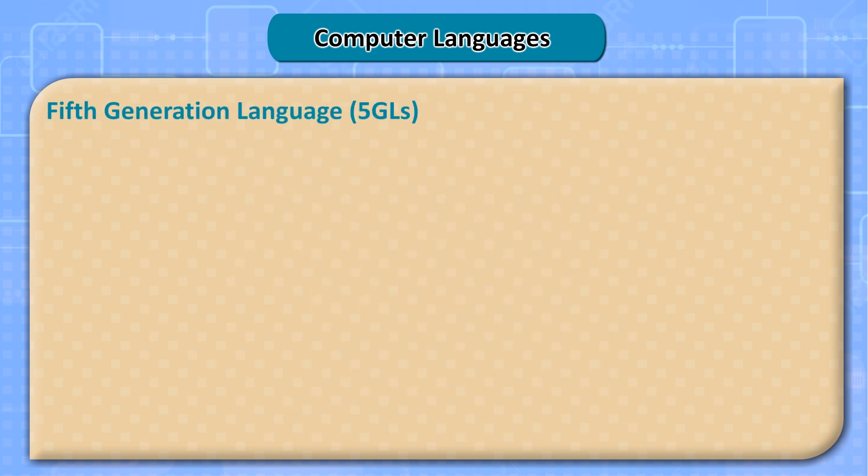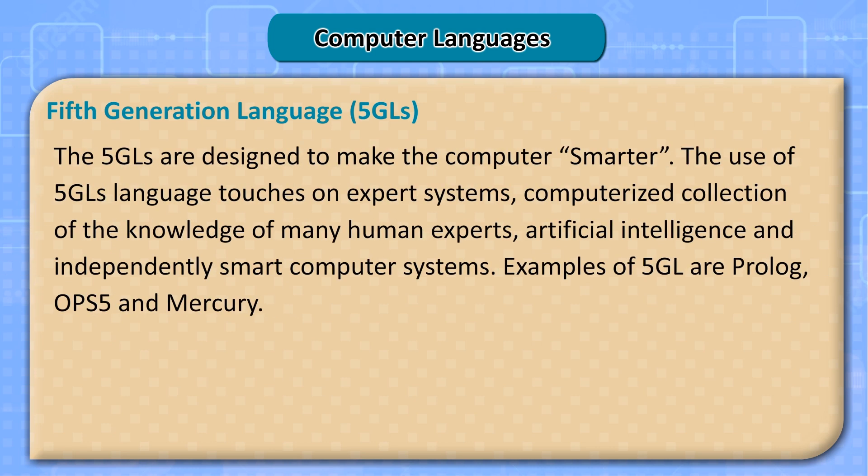Fifth Generation Language (5GL). The 5GLs are designed to make the computer smarter. The use of 5GL touches on expert systems, computerized collection of the knowledge of many human experts, artificial intelligence, and independently smart computer systems. Examples of 5GL are Prolog, OPS5, and Mercury.